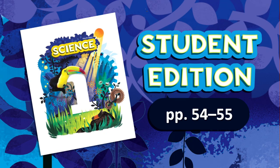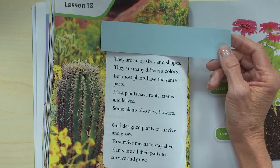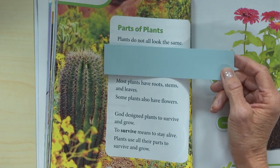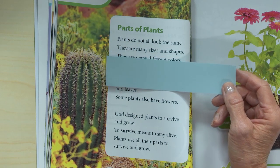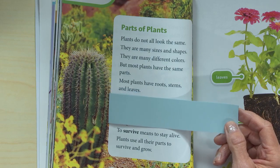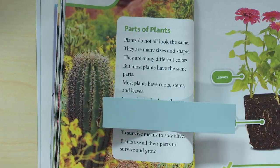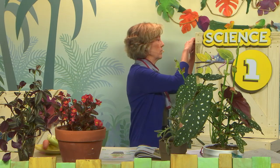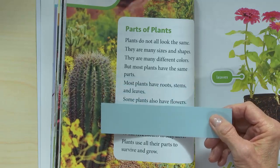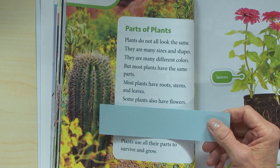Turn in your book to page 54 and as we read, find out what God designed plants to do. Plants do not all look the same. They are many sizes and shapes and many different colors. But most plants have the same parts — roots, stems, and leaves. Some plants also have flowers. God designed plants to survive and grow. Our vocabulary word is 'survive,' which means to stay alive. Plants use all their parts to survive and grow.